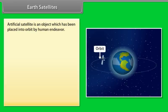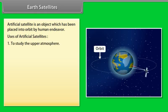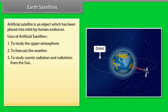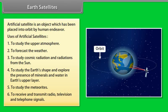Artificial satellite is an object which has been placed into the orbit by human endeavor. Uses of artificial satellites are: 1. To study the upper atmosphere. 2. To forecast the weather. 3. To study cosmic radiation and radiations from the sun. 4. To study the earth's shape and explore the presence of minerals and water in earth's upper layer. 5. To study the meteorites. 6. To receive and transmit radio, television and telephone signals.